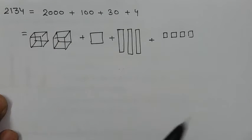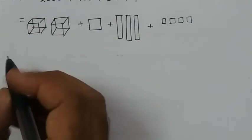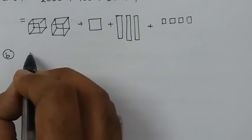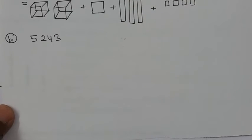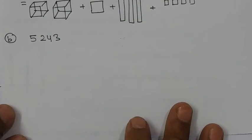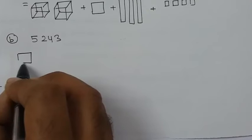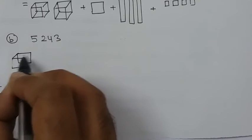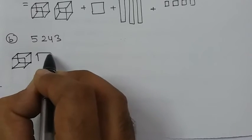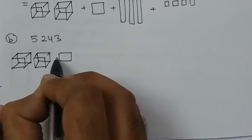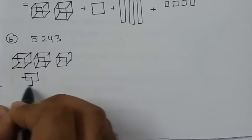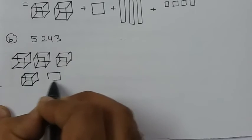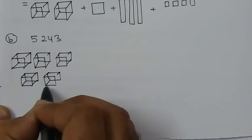Now next, second part, 5243. What is it? 5 thousand. So first of all, how will it be? 5 times. So let's make this, 1000, 2000, 3000, 4000, 5000.